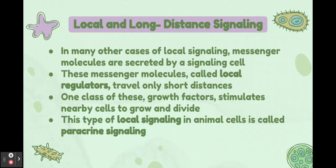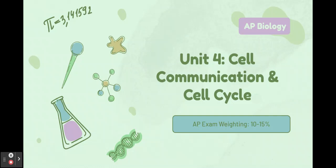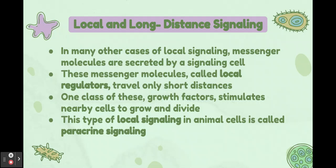In many cases of local signaling, messenger molecules are secreted by a signaling cell — meaning they form and release some kind of substance or molecule. These messenger molecules, also known as local regulators, travel only short distances. One class of these, growth factors, stimulates nearby cells to grow and divide. Local signaling in animal cells is called paracrine signaling — remember paracrine equals local signaling.